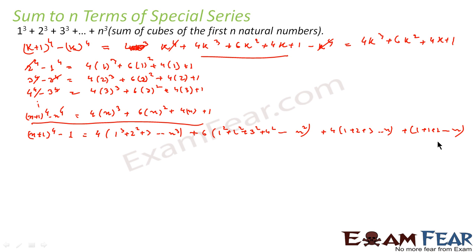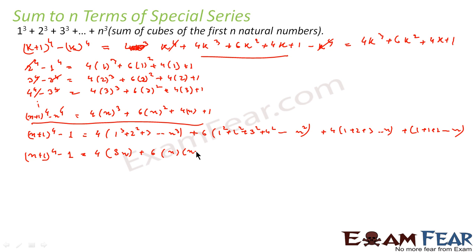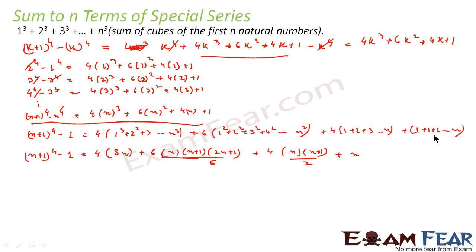So we can write: n plus 1 to the power 4 minus 1 equals 4·Sn (this is what we have to find) plus 6 into the sum of squares of natural numbers, which is n(n+1)(2n+1)/6, plus 4 into the sum of natural numbers, which is n(n+1)/2, and plus n (since adding 1 exactly n times gives n). Cancelling, we get 4·Sn equal to the expression.